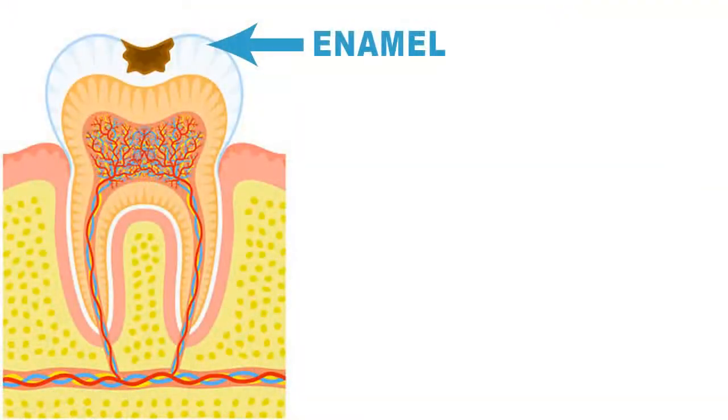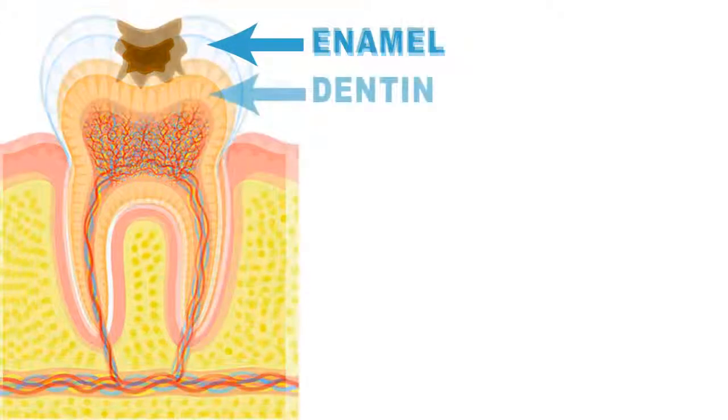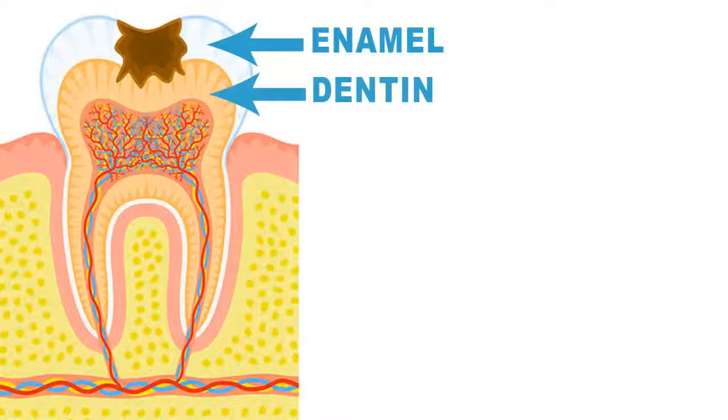When a cavity is started, it first dissolves through the first surface of the tooth, the enamel. Once a cavity has penetrated the enamel surface, it then goes to the next layer, the dentin.